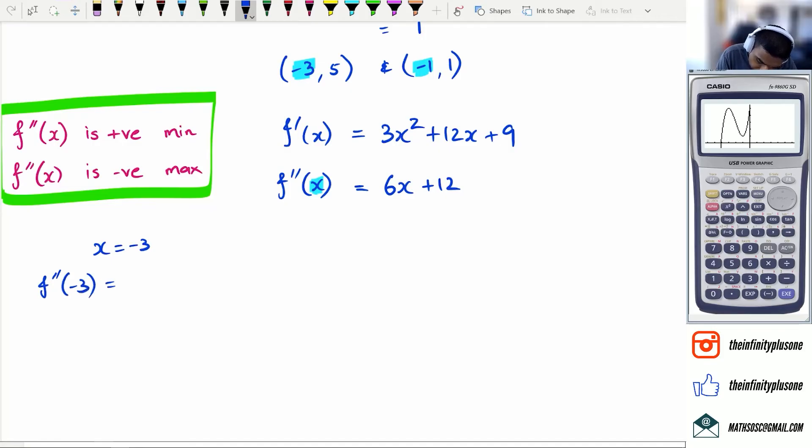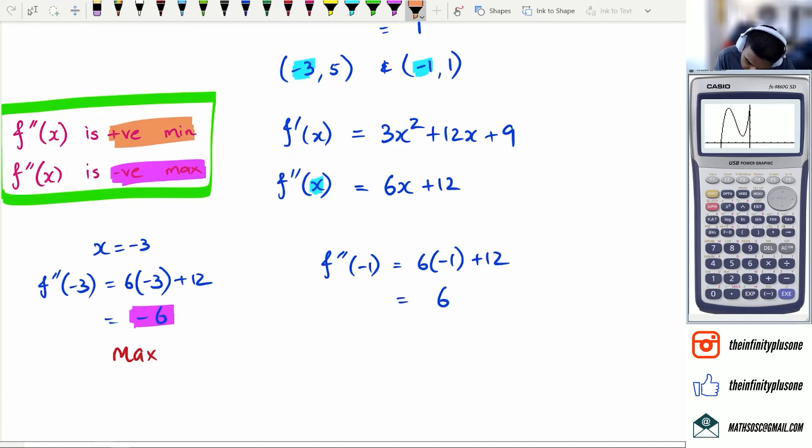So we're going to do when x equals negative 3 first. That means f''(-3) equals 6 times negative 3 plus 12, which equals negative 6. And because it is negative, we're actually going to call this the maximum point. And then if you look at f''(-1), we've got 6 times negative 1 plus 12, which equals positive 6. And because this value is positive, that means it is going to be a minimum.